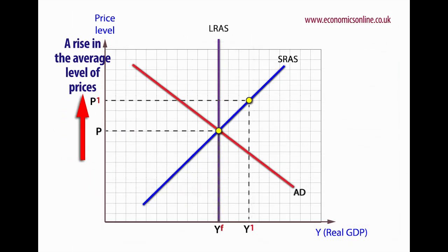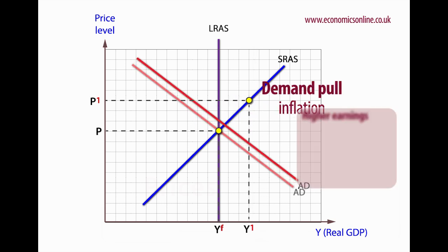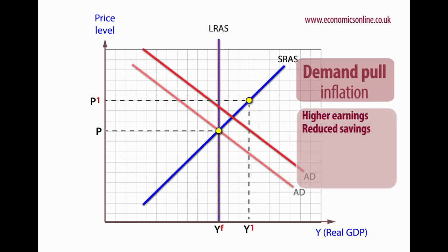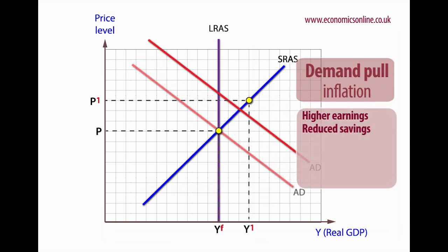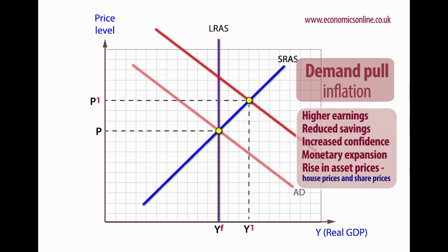Inflation can arise from excessive aggregate demand, which can pull up prices. This can be caused by higher earnings, a reduction in savings, increased consumer confidence, an excessive expansion in the money supply, and a rise in asset prices, especially house prices.